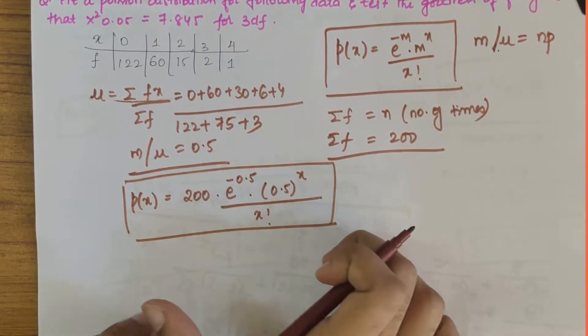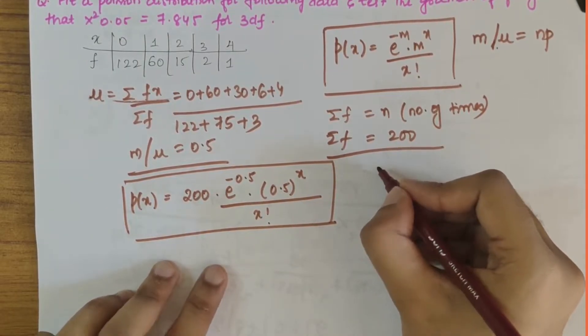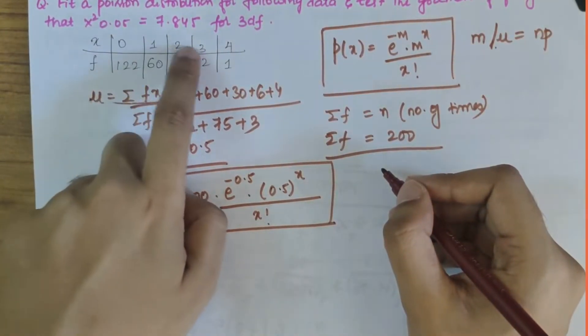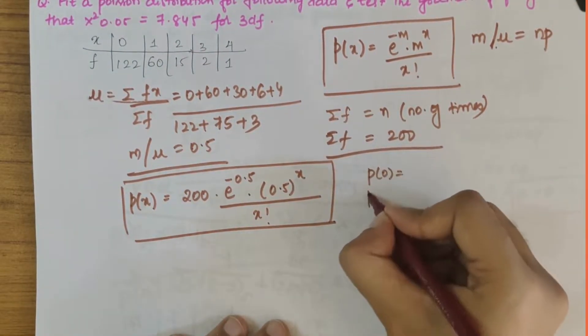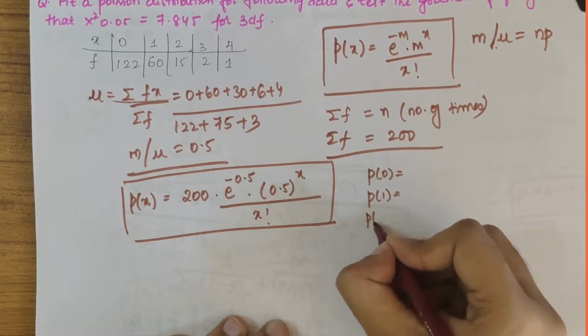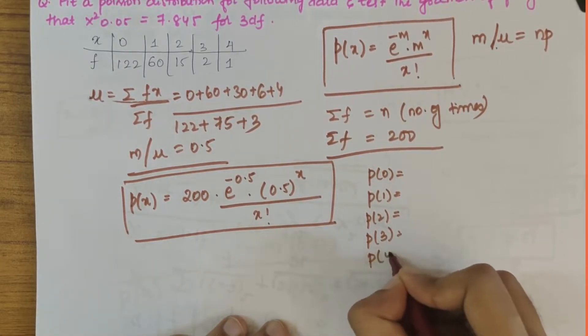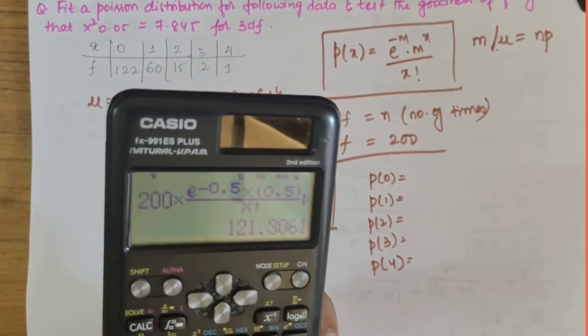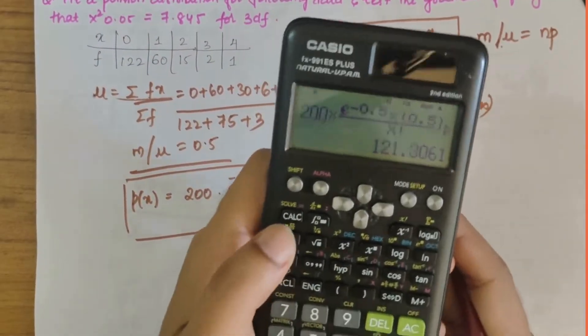This is the equation which we have obtained. Now we have to solve this equation for various values of x: 0, 1, 2, 3, and 4. So we need to calculate p of 0, p of 1, p of 2, p of 3, and p of 4.